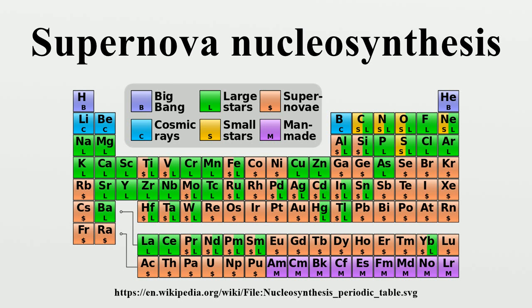A supernova is a massive explosion of a star that occurs under two principal scenarios. The first is that a white dwarf star undergoes a nuclear-based explosion after it reaches its Chandrasekhar limit after absorbing mass from a neighboring star. The second, and more common, cause is when a massive star, usually a supergiant, reaches nickel-56 in its nuclear fusion processes. The isotope undergoes radioactive decay into iron-56, which has one of the highest binding energies of all of the isotopes, and is the last element that produces a net release of energy by nuclear fusion.